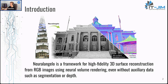Unfortunately, with current methods the quality of recovered meshes does not scale well with the capacity of MLPs. To deal with that, some works use auxiliary data such as depth and segmentation, and other works use structure from motion as a guiding mechanism. This paper, Neural Angelo, does not require any auxiliary data and promises results that significantly surpass previous works.